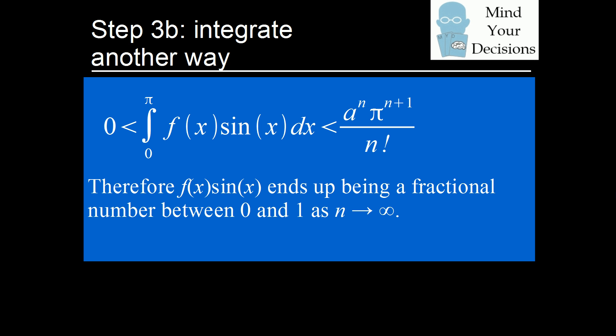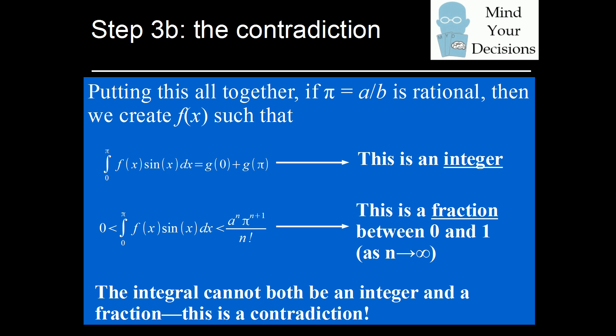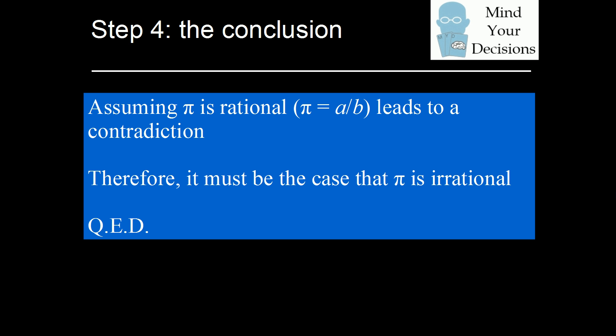And that's the problem — here is the contradiction. We started with the assumption that pi is rational, from which we constructed a function such that its integral from zero to pi equals g of zero plus g of pi, which is an integer. But using the same valid reasoning, we showed that the same integral can be made to be a fraction between zero and one for sufficiently large n. It's impossible for this integral to be both an integer and a fraction between zero and one. This is the contradiction. Therefore, assuming pi is rational leads to a contradiction, and it must be the case that pi is irrational.